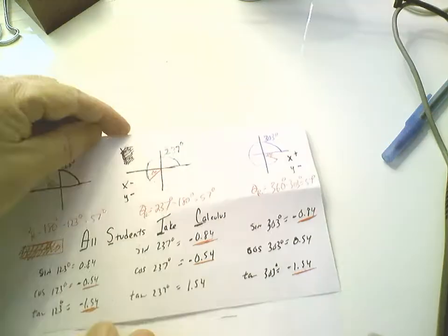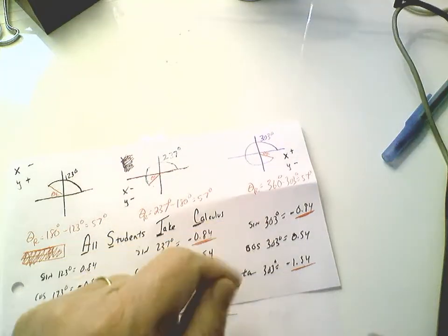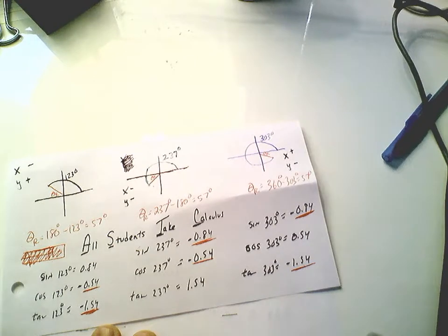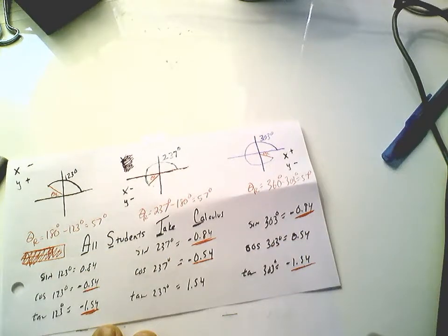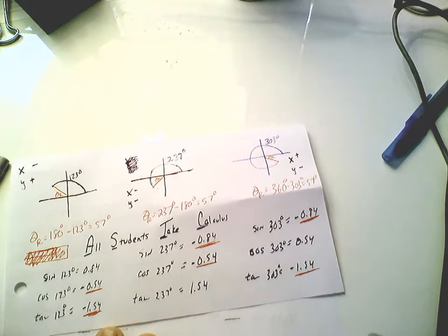Last quadrant. Here's what the calculator tells you for the sine, cosine, and tangent of 303 degrees. See in your mnemonic, hey, it's just the cosine that winds up being positive. The sine and tangent are negative.